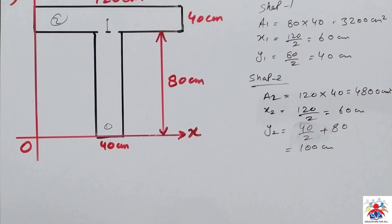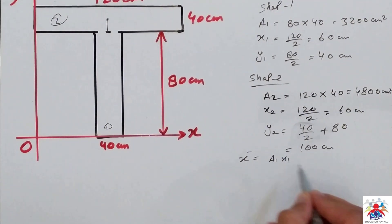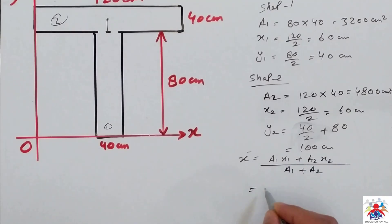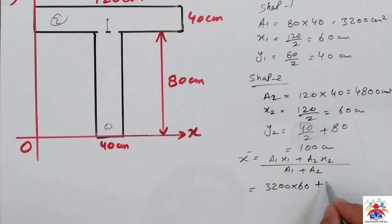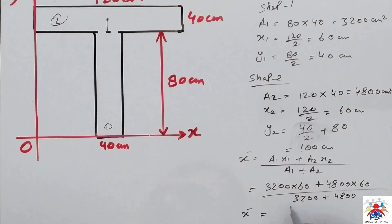Now we have calculated A1, x1, y1 for shape one and A2, x2, y2 for shape two. We put all these numbers into one equation. X-bar equals (A1·x1 + A2·x2) divided by (A1 + A2), which is (3200×60 + 4800×60) divided by (3200 + 4800). X-bar equals 60 centimeters.